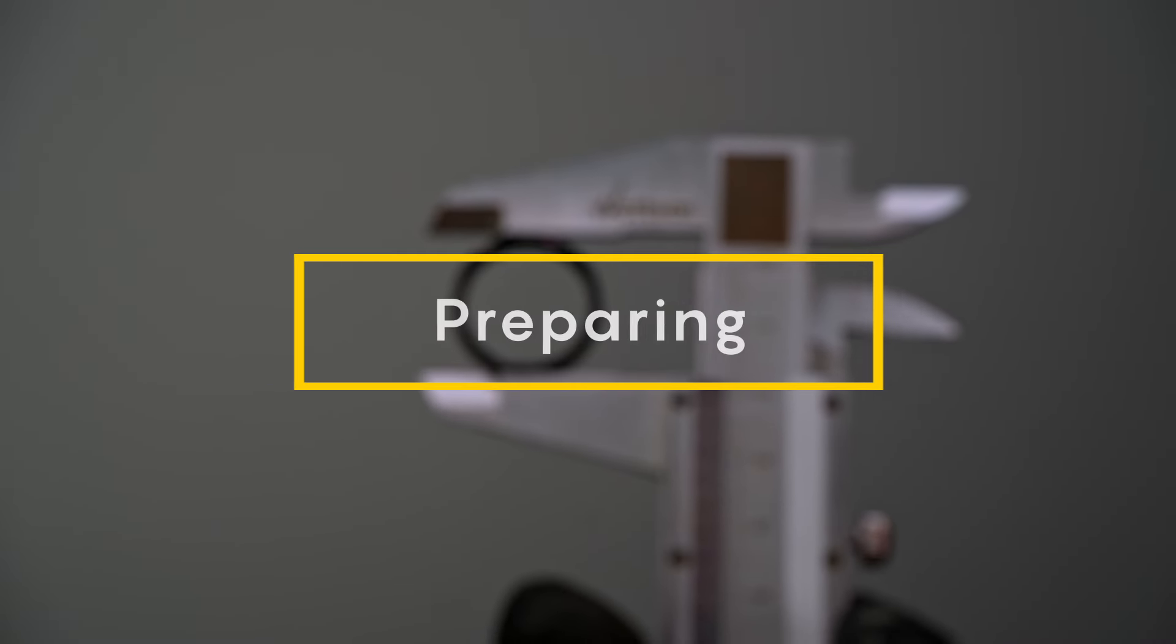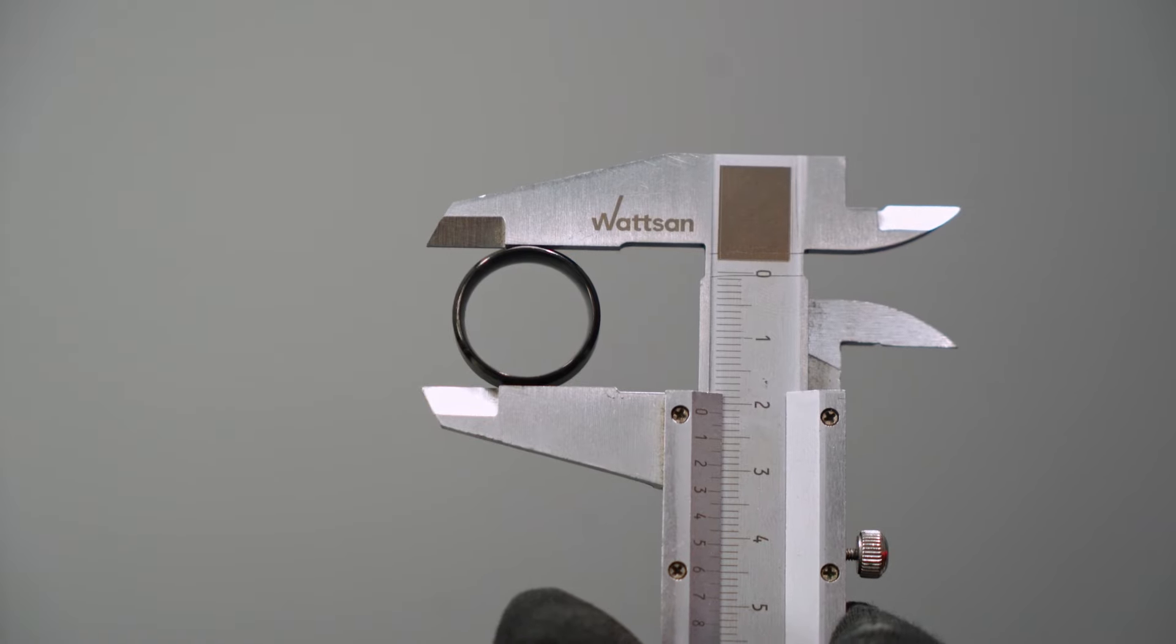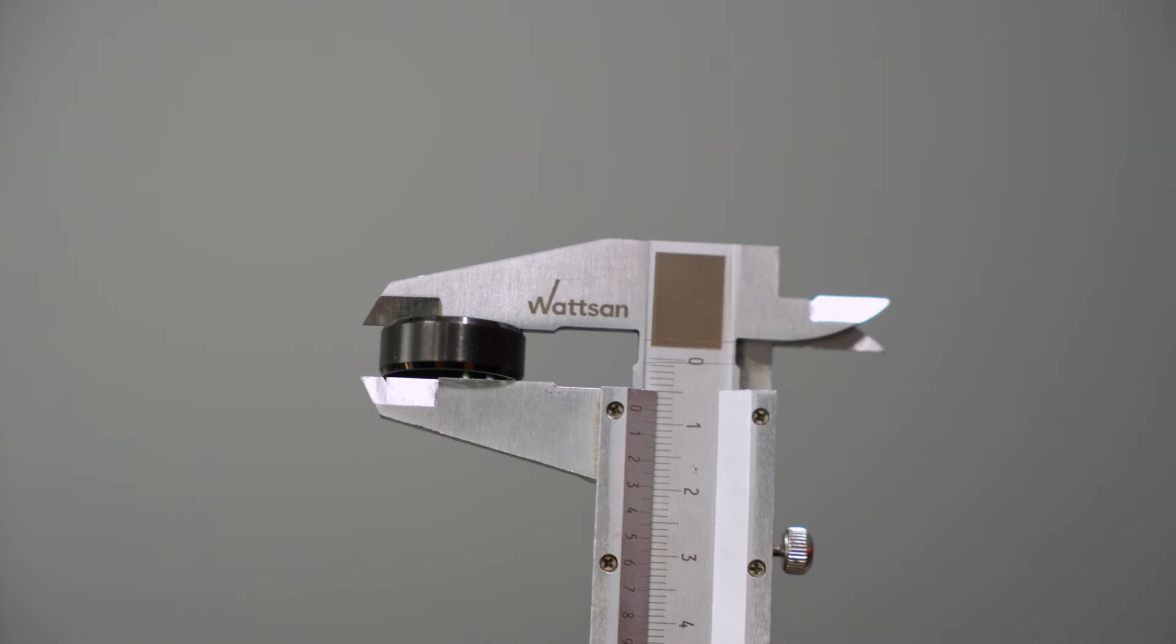Preparation. We start with measuring the ring. Arm yourself with a caliper and let's get started. First, measure the outside diameter. Second, now measure the height of the ring.